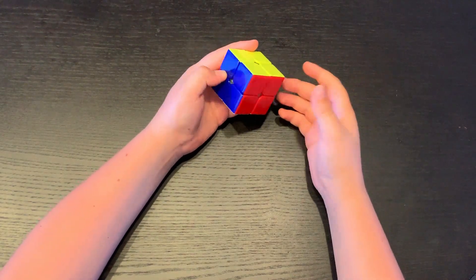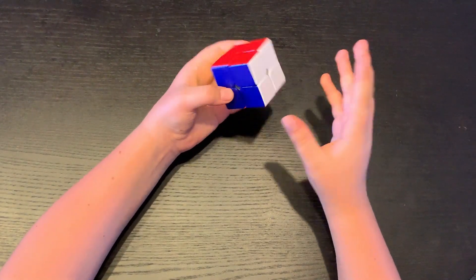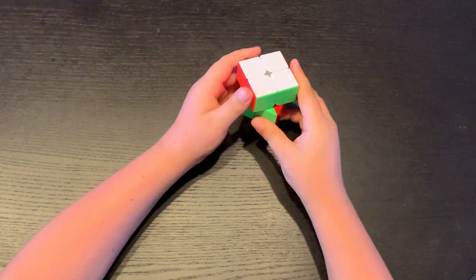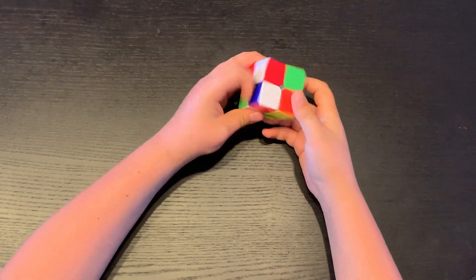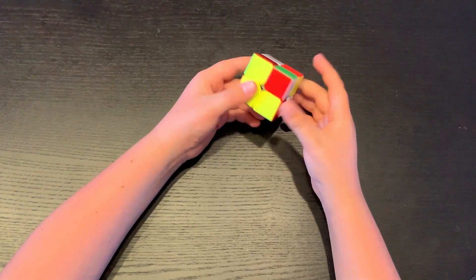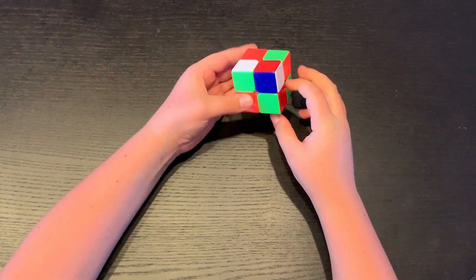And how I improved the beginner's method was I created this method called the OKU method, which is basically making F2Ls on a 2x2.